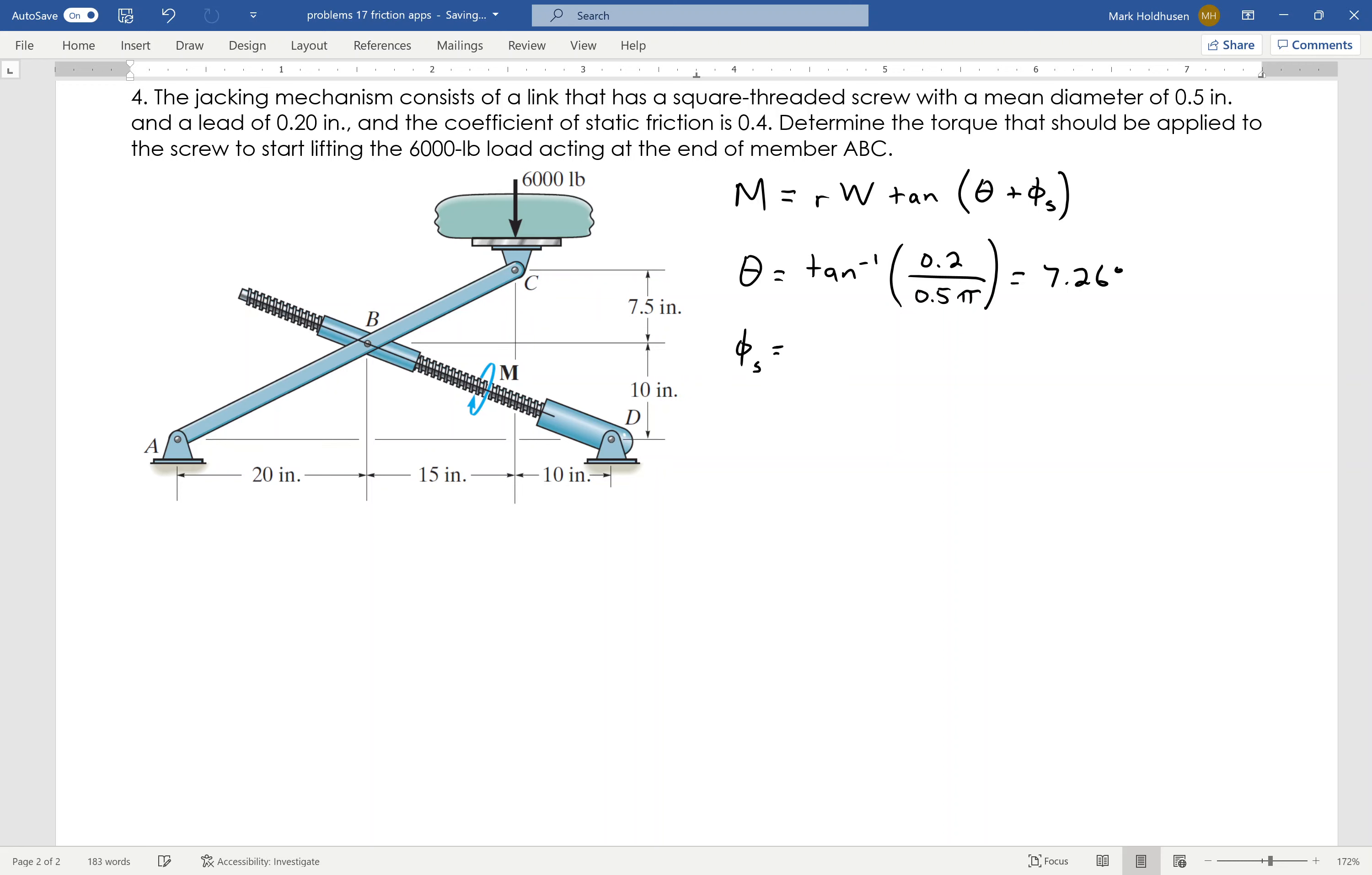My friction angle, phi_s, is going to be the inverse tangent of the coefficient of static friction, which is 0.4. From that, I find the friction angle to be 21.8 degrees.